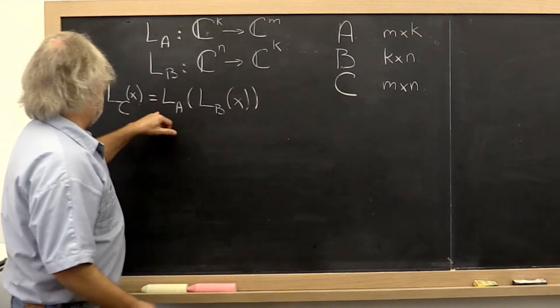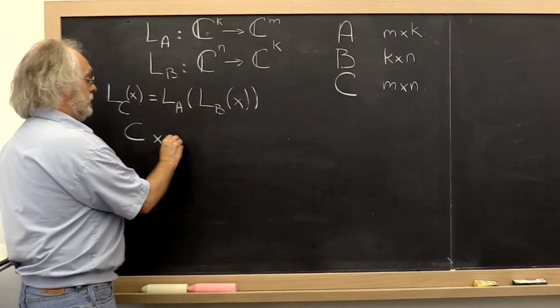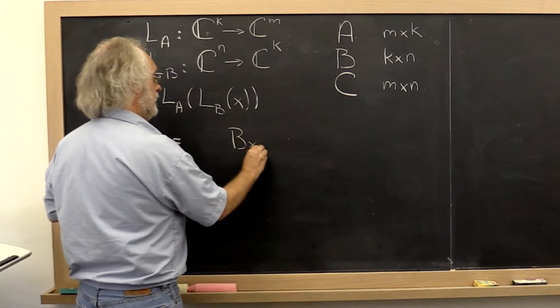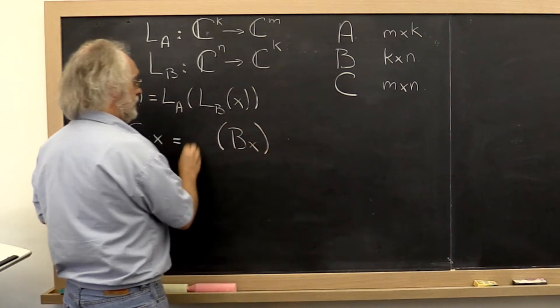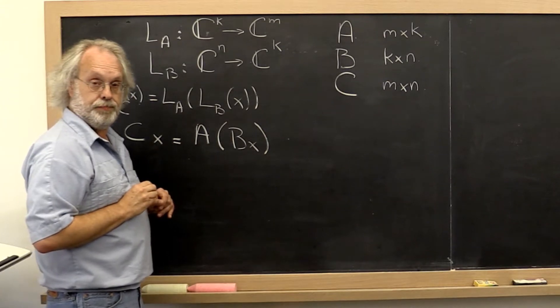And notice that C applied to a vector x must be equal to first applying B to a vector x, and then taking the result of that and applying A to that.